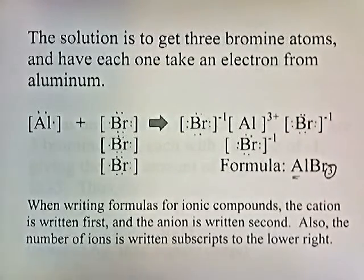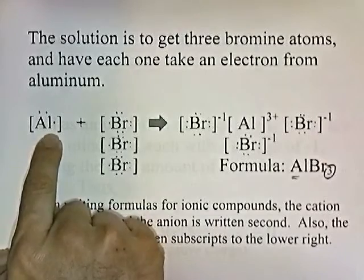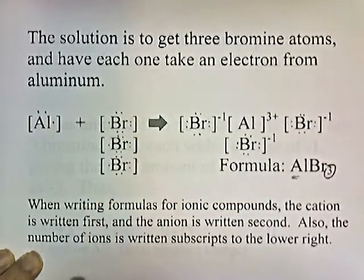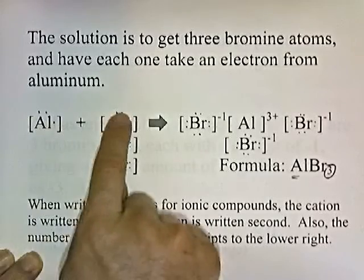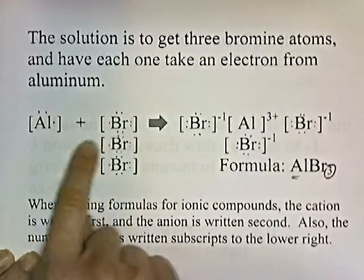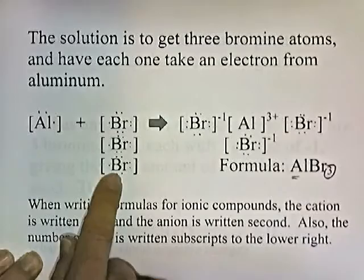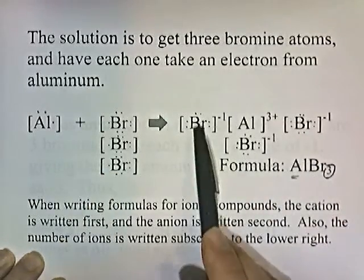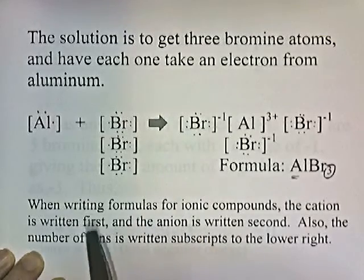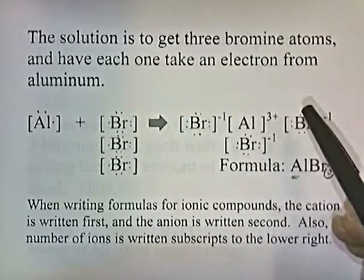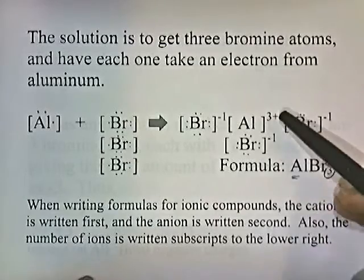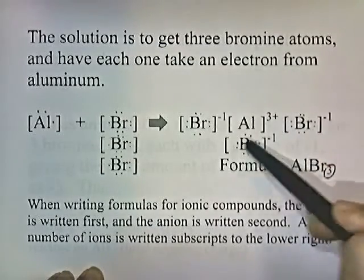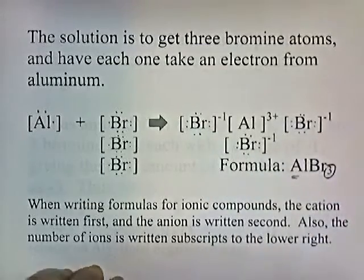The solution is to get three bromine atoms and have each one take one electron from aluminum. Aluminum has three electrons to give away and three bromines each want to steal one to get an octet. One electron goes to each bromine. Now each bromine has eight electrons around it, so it's happy. Aluminum now has a plus three charge, attracted to the bromines.